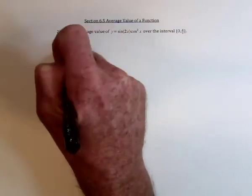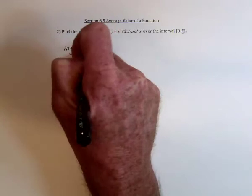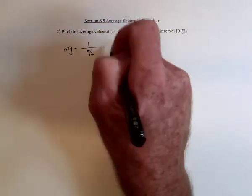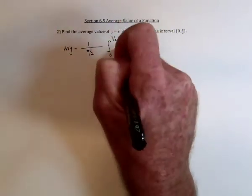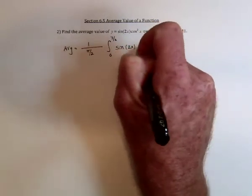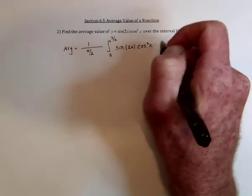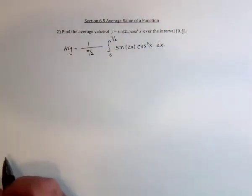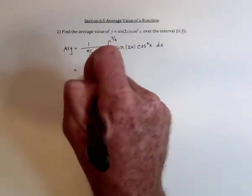So the average is going to be 1 over the length of the interval, and then we integrate from 0 to pi over 2. So this is going to be inverted, becomes 2 over pi.